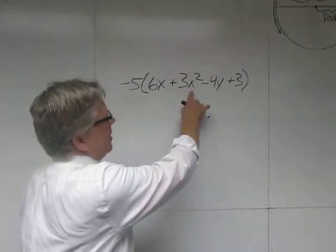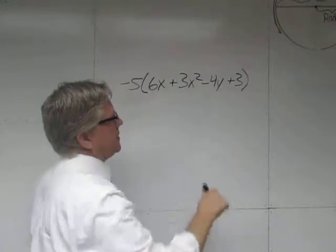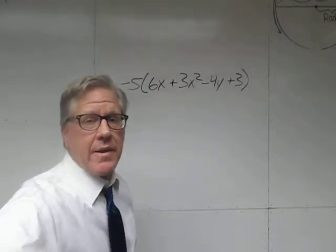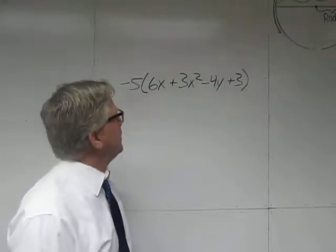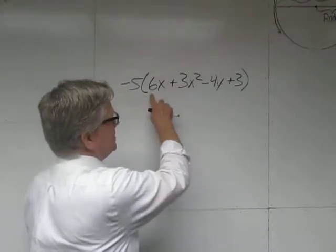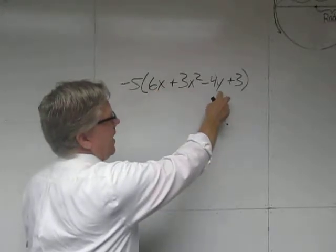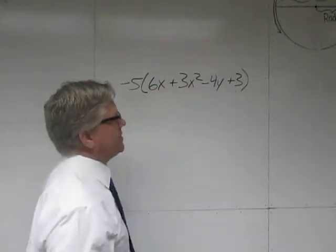6x, 3x squared, 4y, and 3. Does anyone see anything where the variables are the same that we can combine to add or subtract them? I don't. 6x, you can't add that to 3x squared, the variables are different. 4y, the variable is different in our constant of 3.